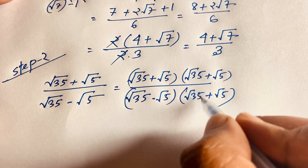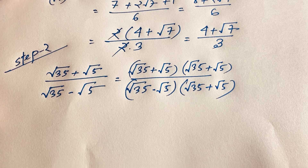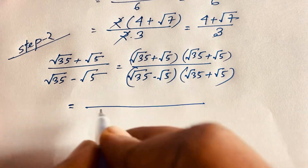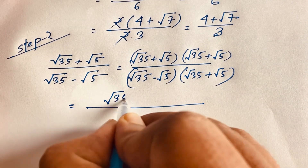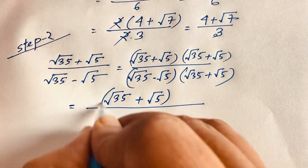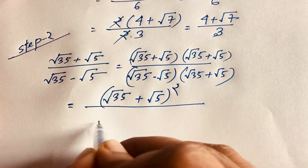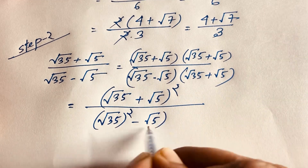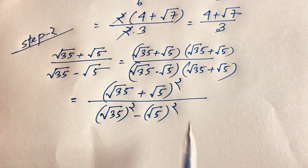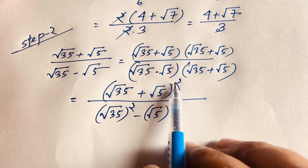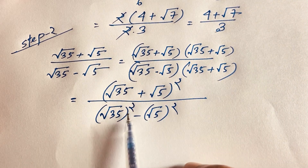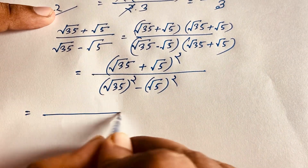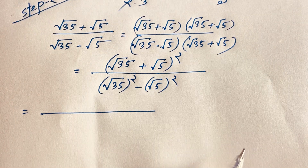I multiply the denominator by square root of 35 plus square root of 5. The numerator becomes square root of 35 plus square root of 5, whole to the power 2. The denominator is square root of 35 squared minus square root of 5 squared, using the identity (a+b)(a−b) = a² − b². Now applying (a+b)² = a² + 2ab + b² to the numerator: